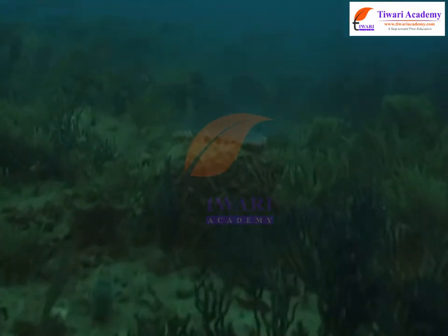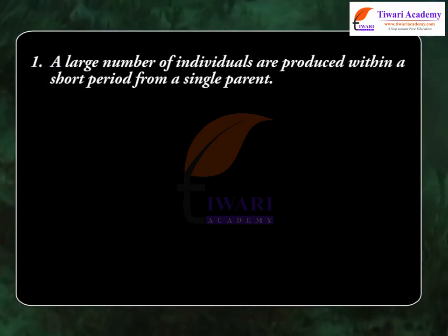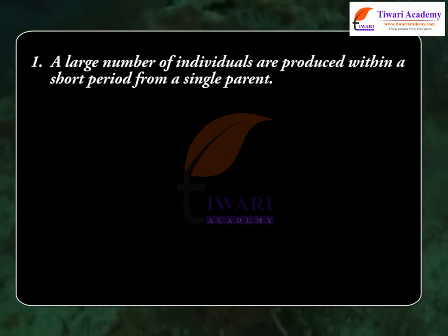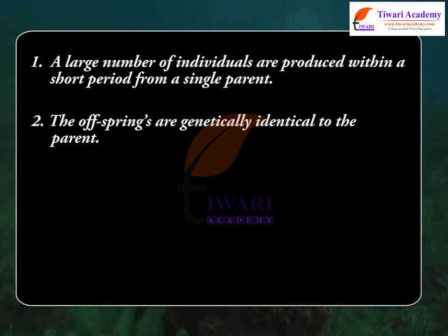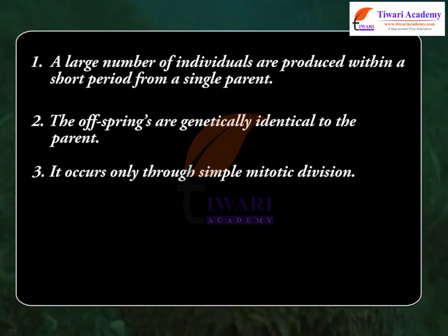Advantages of asexual reproduction: A large number of individuals are produced within a short period from a single parent. The offspring are genetically identical to the parent. It occurs only through simple mitotic division. It helps in the dispersal of young ones to far-off places, and it also helps the animal to tide over unfavorable environmental conditions.